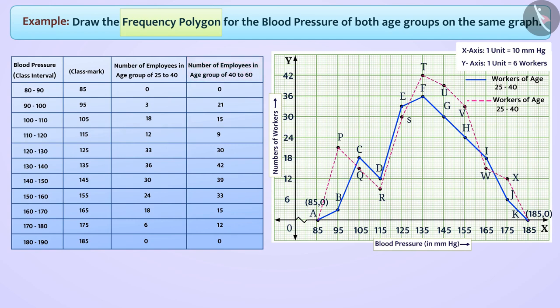Can you get any information from this graph? Think, think! Let me tell you, we can get various information from this graph. For example, if we look at the vertical line of blood pressure 95, then it is known that those employees whose blood pressure is 95 mmHg are lower in age group of 25 to 40 as compared to those in age group of 40 to 60.